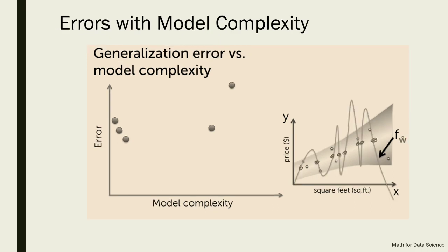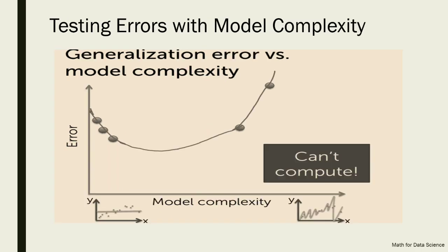As I make the model super complex, the error increases. This is because the model was created based on all data points in the training set, and with a super complex model those points are fully memorized — the model can't give a generalized solution. Therefore, at that level of model complexity, the testing error shoots up significantly, going outside the range of all data points.